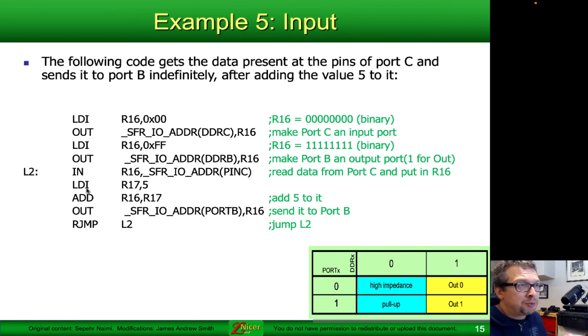What we do first is set the data direction register for port C to be completely input using zeros transferred into register R16, then making a copy of that and placing it in DDRC. That's the first two lines. The second set of two lines, lines three and four, we are putting a bunch of ones into that temporary register and then making a copy and placing it into data direction register port B.